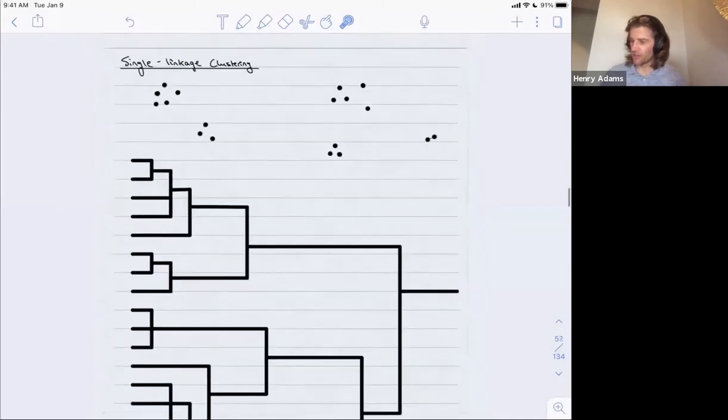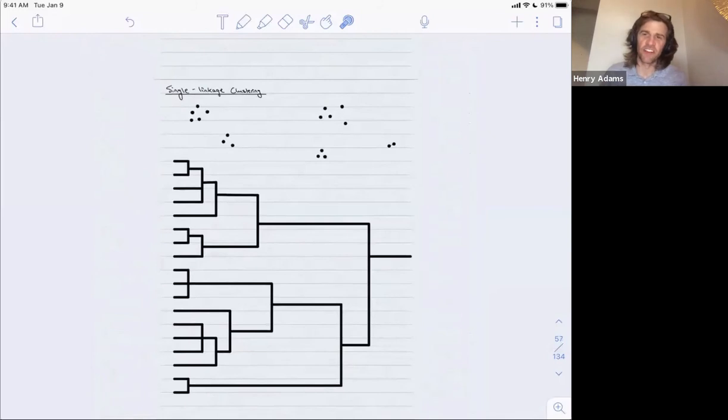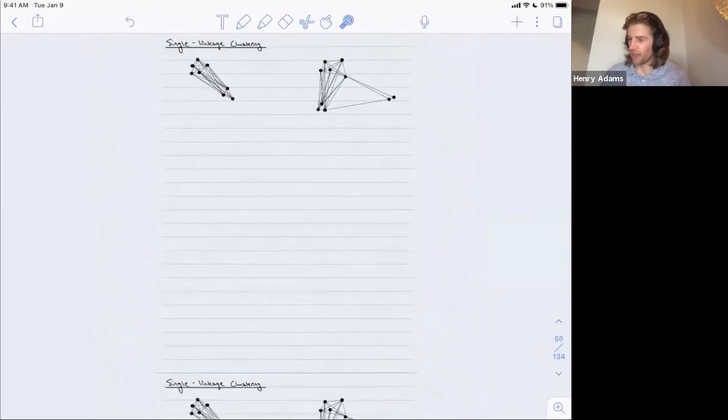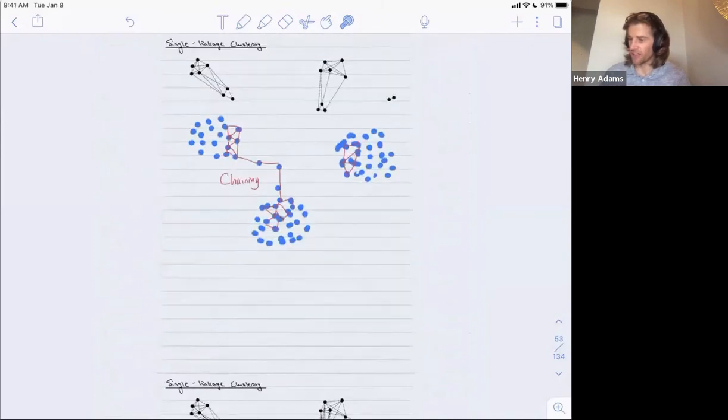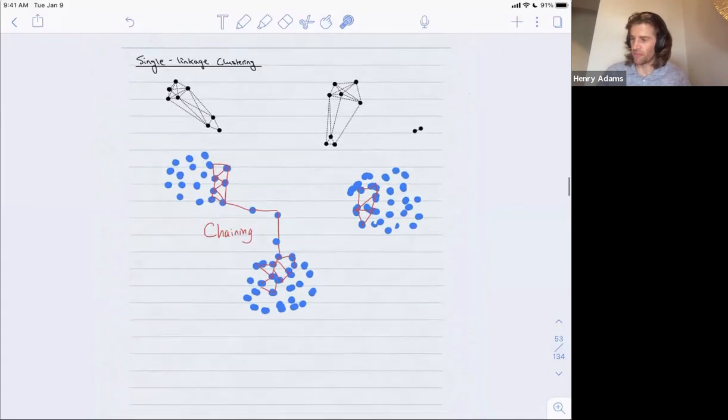So with rules like average linkage, you still produce a dendrogram. You just hope that the dendrogram is a little bit more stable to this chaining phenomenon. And it's almost like you can pay less attention to these outlier points, and they don't group together too large but relatively disjoint clusters as quickly as they do in single-linkage clustering.